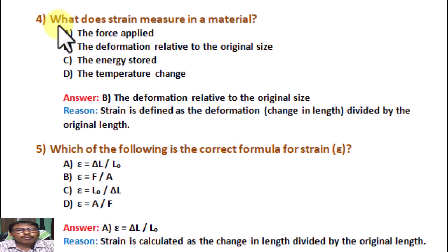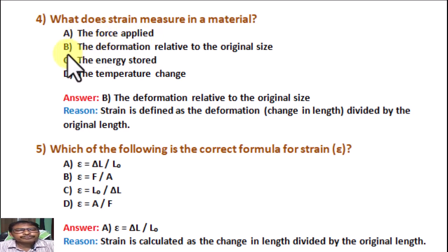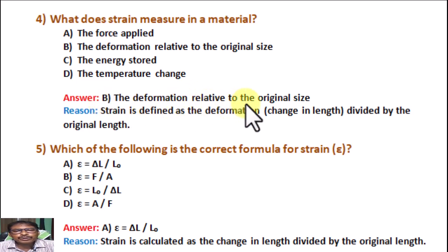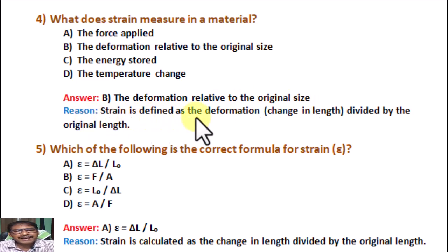Question number 4. What does strain measure in a material? Option A: The force applied. Option B: The deformation relative to the original size. Option C: The energy stored. Option D: The temperature change. Correct answer is B: The deformation relative to the original size. Reason: Strain is defined as the change in length divided by the original length.